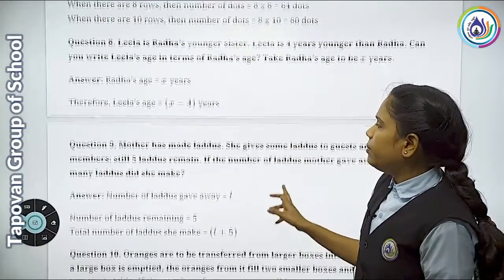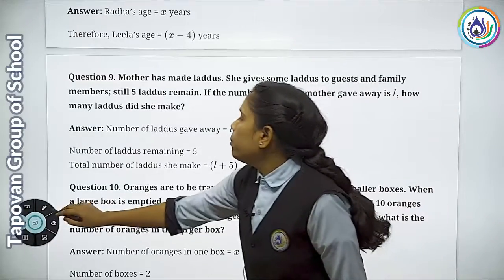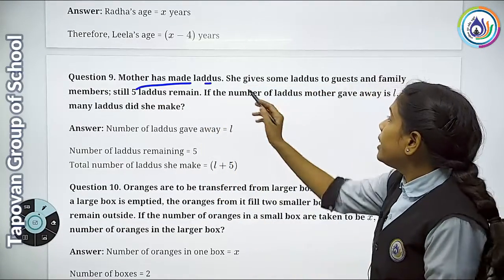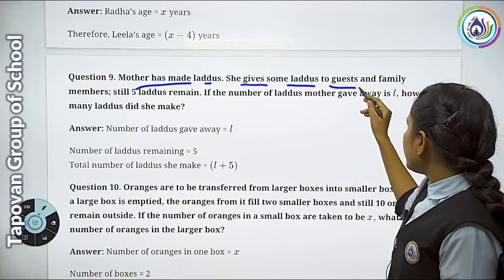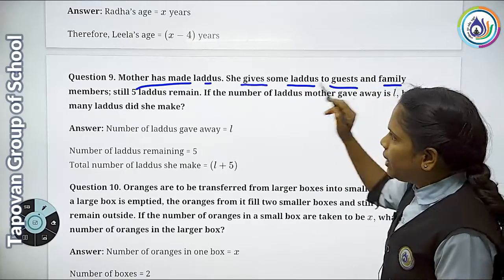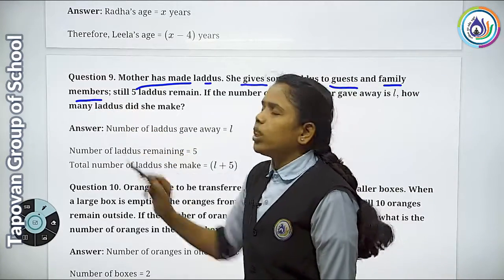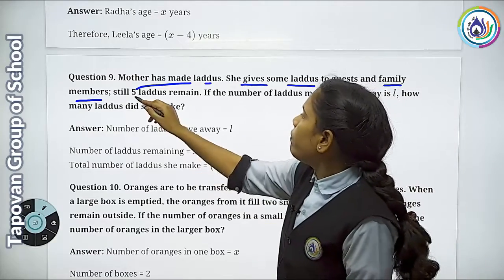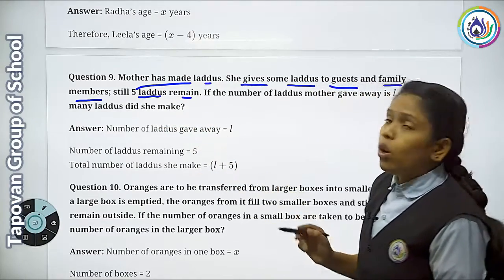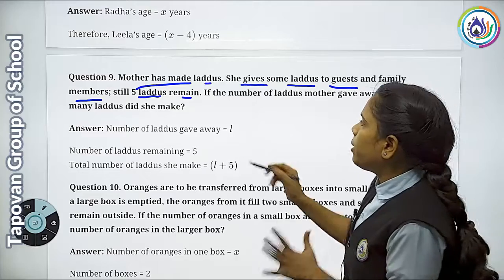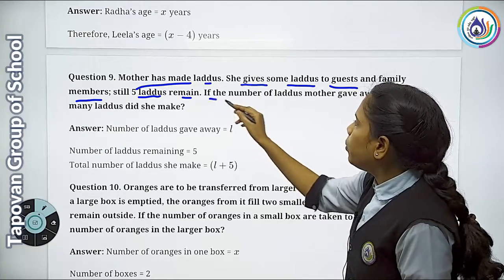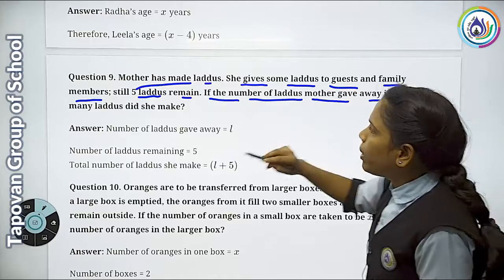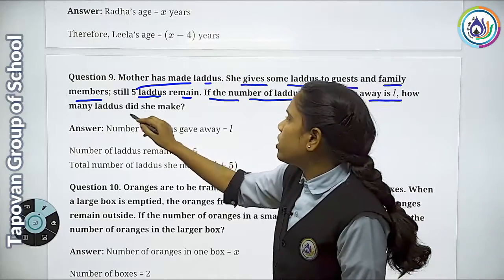Question Number 9: Mother has made laddoos. She gives some laddoos to guests and family members. Still 5 laddoos remain. If the number of laddoos mother gave away is L, how many laddoos did she make?